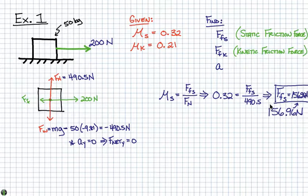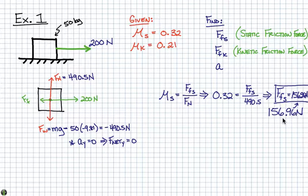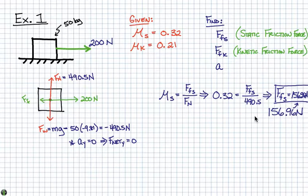If I apply 150 newtons to this box, it will not move. If we don't apply 156.96 newtons, this block will remain exactly in place. Now, since 200 newtons is applied and it's greater than 156.96 newtons, it's greater than the required force to move this block, and this block will move — it will actually accelerate. So now the question becomes: since we know it's in motion and accelerating because we've exceeded the force required to set it into motion, we now have to figure out what is that kinetic friction force — the frictional force that resists the object's motion now that it's actually moving.